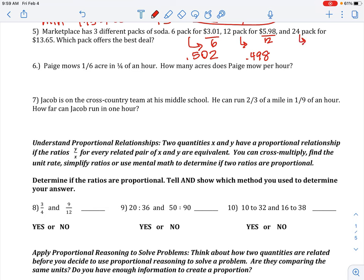And for the 24 pack, you're dividing 13.65 by 24 to get 0.569. So, the best deal is going to be the smallest number, the cheapest, which is the 12 pack.